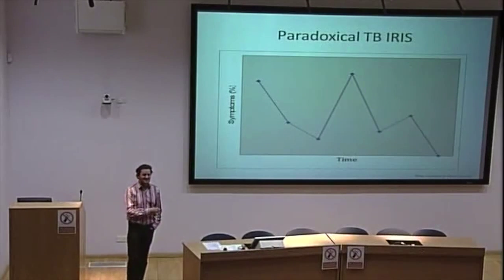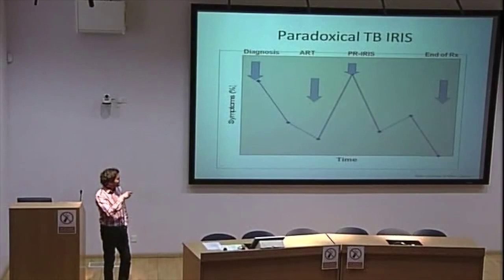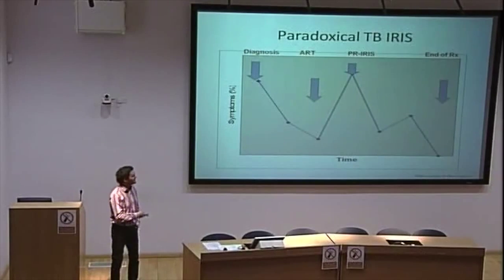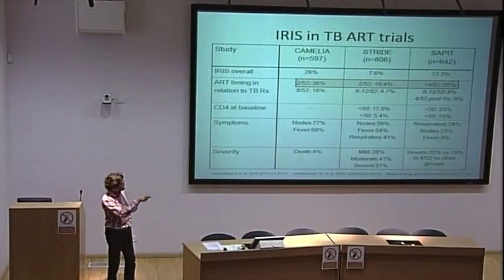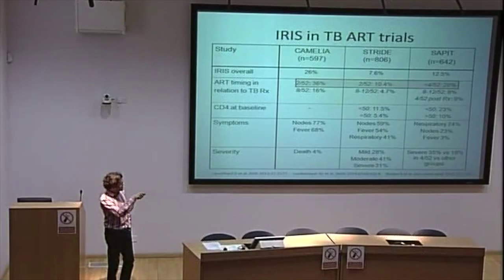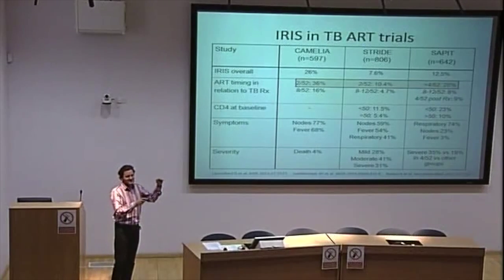This is a slide showing what we typically see with paradoxical IRIS: when you get diagnosed, your symptoms decrease as you're on the right treatment, then you start ART and your symptoms suddenly increase, and then largely they will settle down on themselves with or without symptomatic treatment. If we look at IRIS in the ART trials, IRIS overall is quite significant — anything up to a quarter of people will get IRIS. The early arms, in pretty much all of them, had much more IRIS than the late arms. We know starting early is bad in terms of IRIS but probably good overall for mortality.